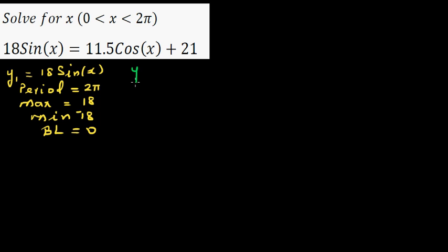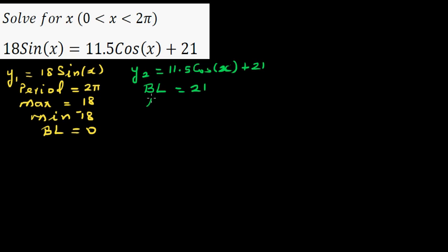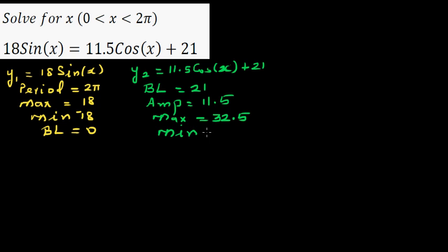For the second equation, y2 = 11.5 cos x + 21. The baseline is 21, the amplitude is 11.5, so the maximum is 21 + 11.5 = 32.5, and the minimum is 21 − 11.5 = 9.5. Again the period is 2π.